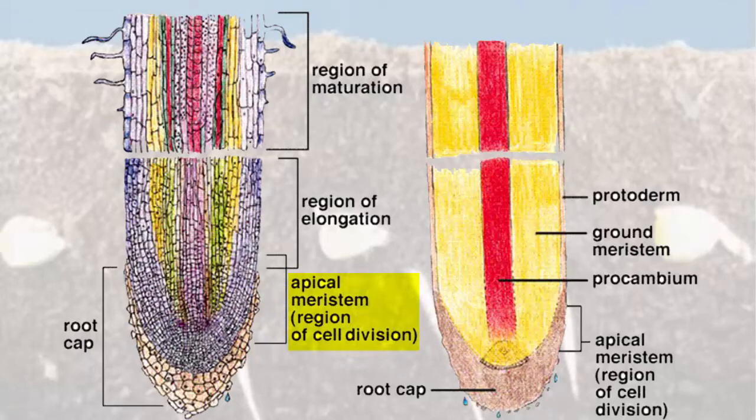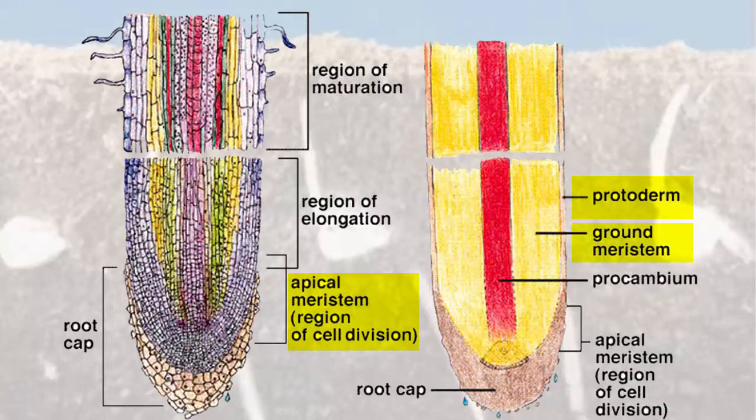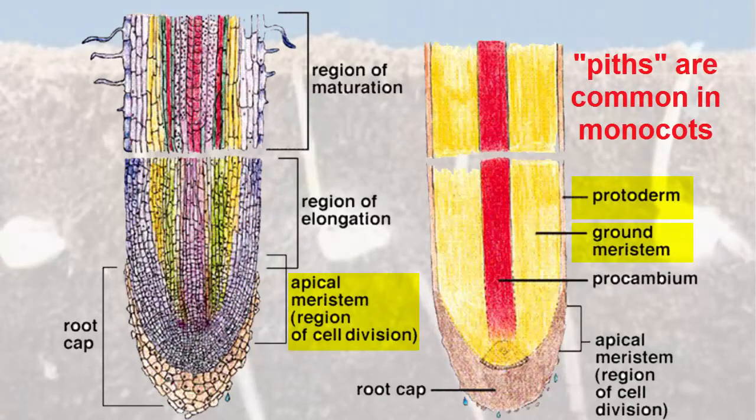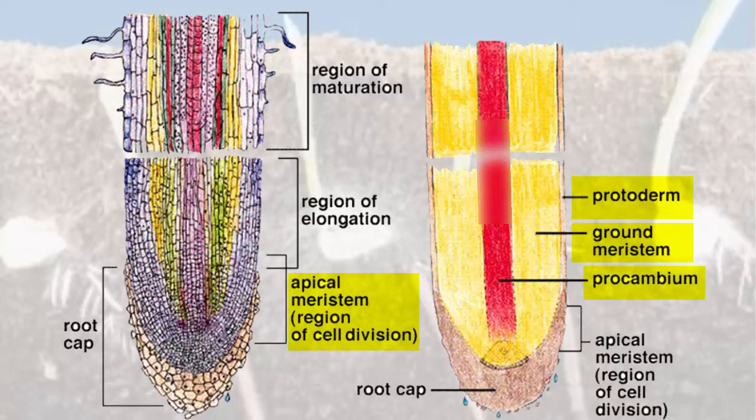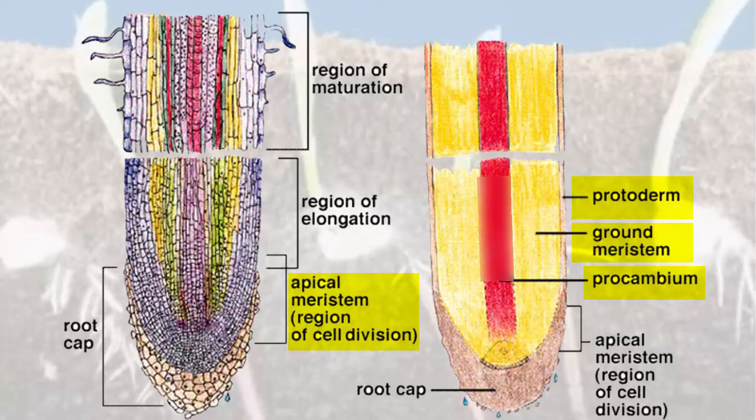In the region of cell division, we can find the meristematic region giving rise to the primary meristems: the protoderm which will give rise to the primary epidermis, the ground meristem which will become the parenchymatous cortex and pith in some roots, and the procambium which is a solid cylinder at the center will give rise to the primary xylem and the primary phloem.